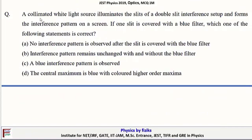Next problem: A collimated white light source illuminates the slits of a double slit interference setup and forms an interference pattern on a screen. If one slit is covered with a blue filter, which one of the following statements is correct? Options include: no interference pattern is observed, or a blue interference pattern is observed with the central maxima blue and colored higher-order maxima.